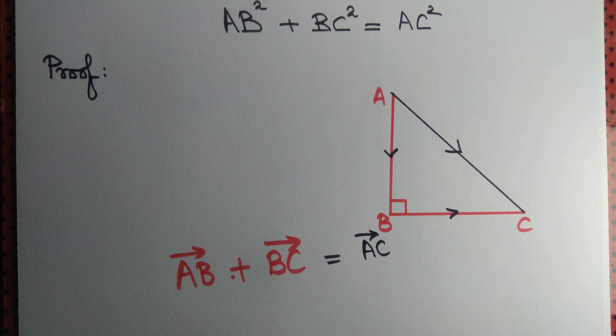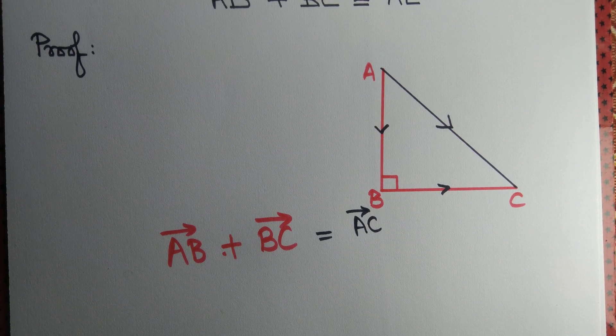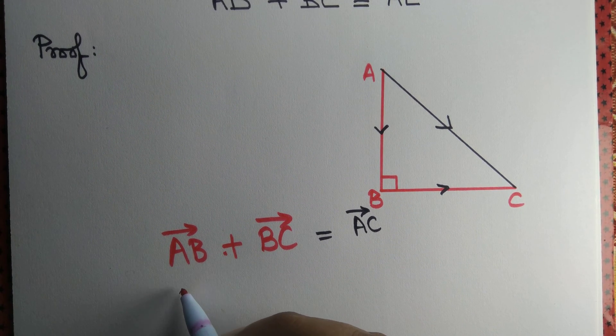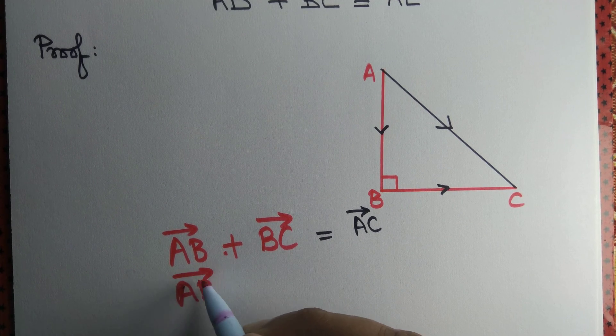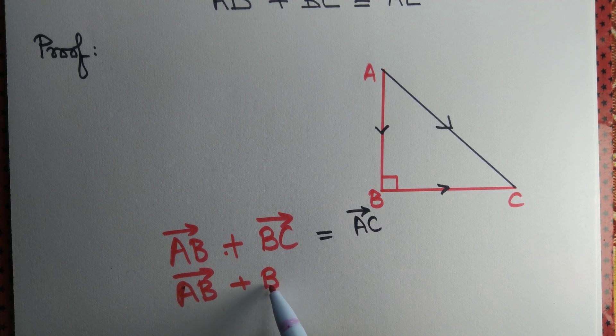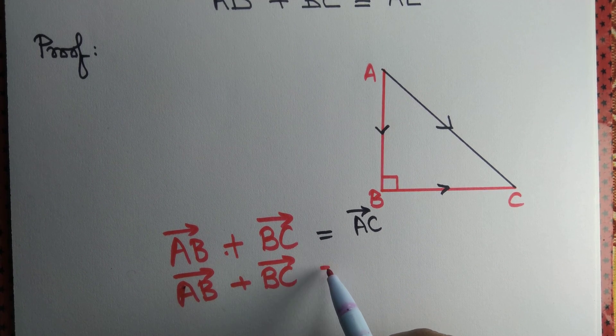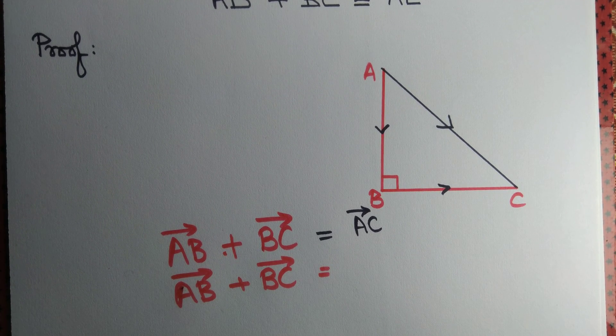Let's write triangle law once again. We start from A, move up to B, then move from B to C, that is same as moving from A to C.